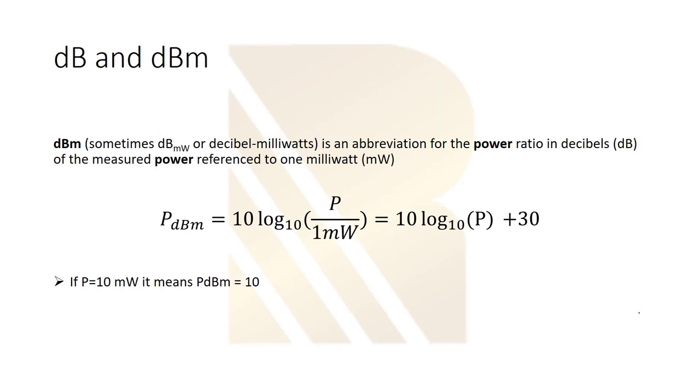There is also another definition which is really important. Most of the time in microwave and RF world, we use dBm. It's actually similar to dB, but it has one difference. Here, our reference is 1 milliwatt instead of 1 watt. The only difference is here.